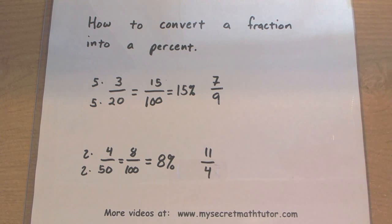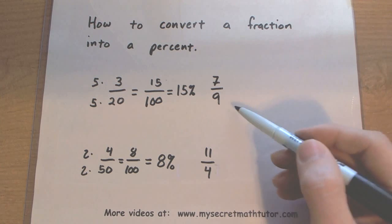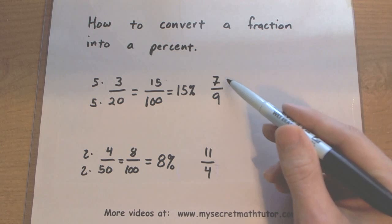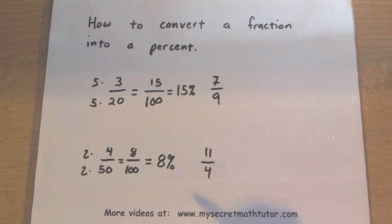Now those ones weren't too bad, but you're probably thinking, what about those fractions where I can't get 100 on the bottom? For example, let's take this one, 7 ninths. No matter what you try and multiply 9 by, you're not going to be able to get 100 without using some decimals. So how are we going to do these ones?